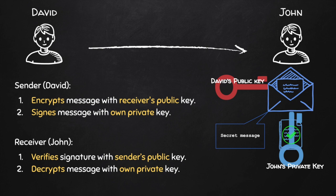This way, John can verify that the message came from the sender, that the message was not modified in transit, and the message is encrypted so the only person who can read it is the receiver, because he kept his own private key private. In the next lecture, I'm going to show you how to encrypt and sign messages as a sender, and how to verify the signature and decrypt the messages as a receiver.